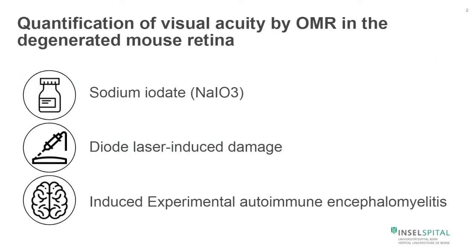Today I'm going to give you some examples. First, I would like to focus on the sodium iodate model of retinal degeneration. Then second, about the diode laser-induced damage in the outer nuclear layer. And finally, I will give you some information about a brain model that can also lead to changes in the retina.